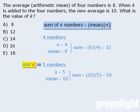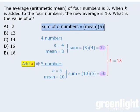Now notice that the sum of the original four numbers is 32, and then when we add k to the set, the new sum is 50. Since k is responsible for the increase in the sum, then k must equal 18, which means the answer here